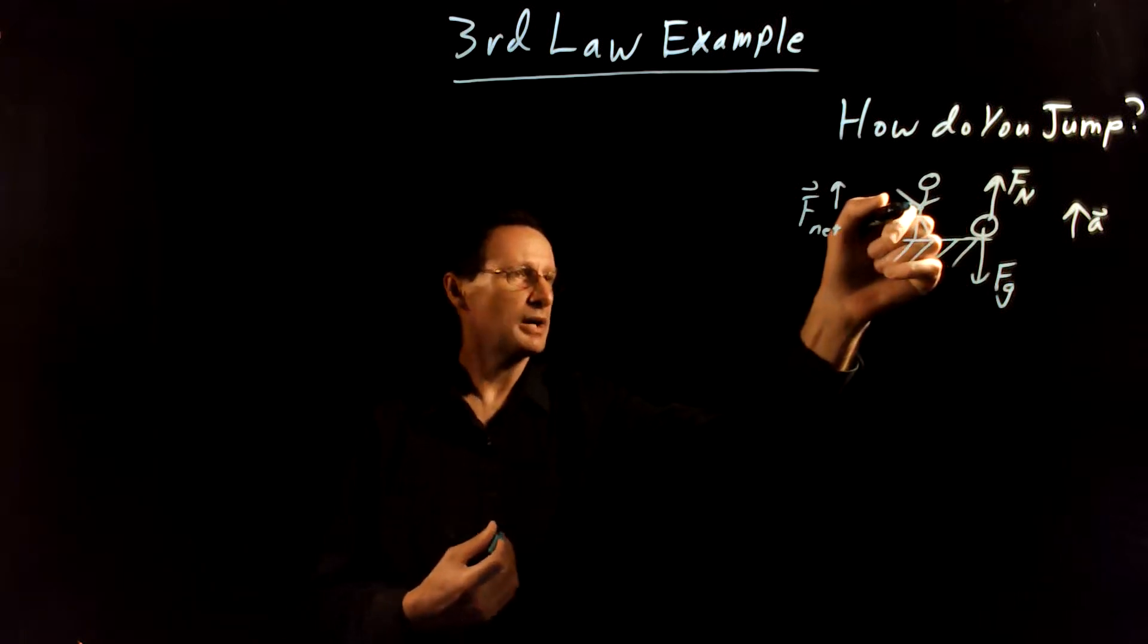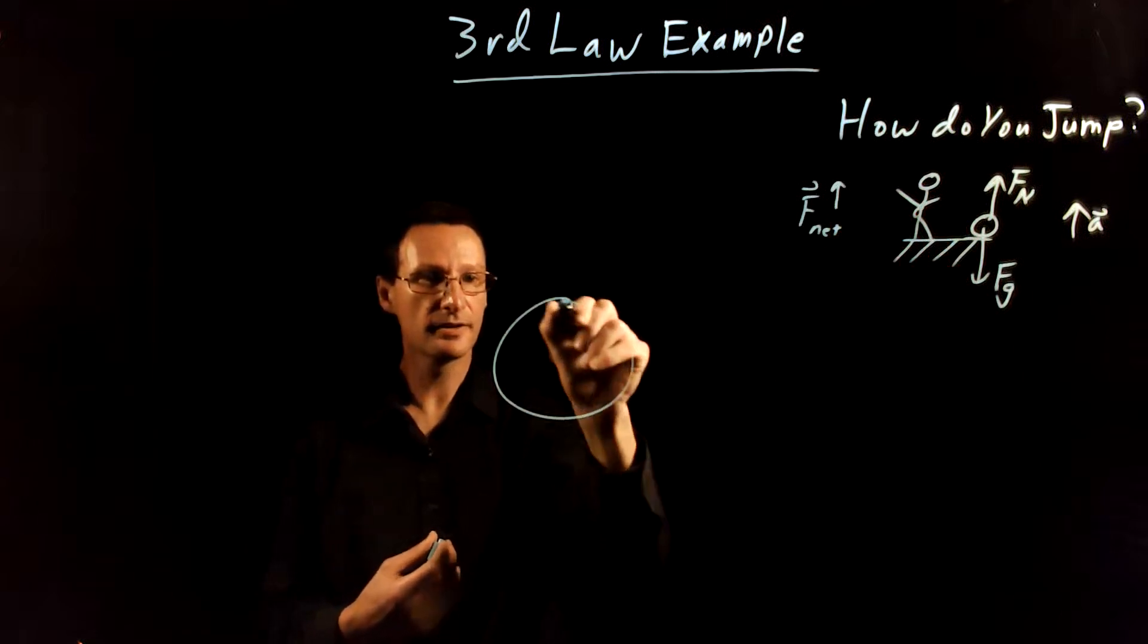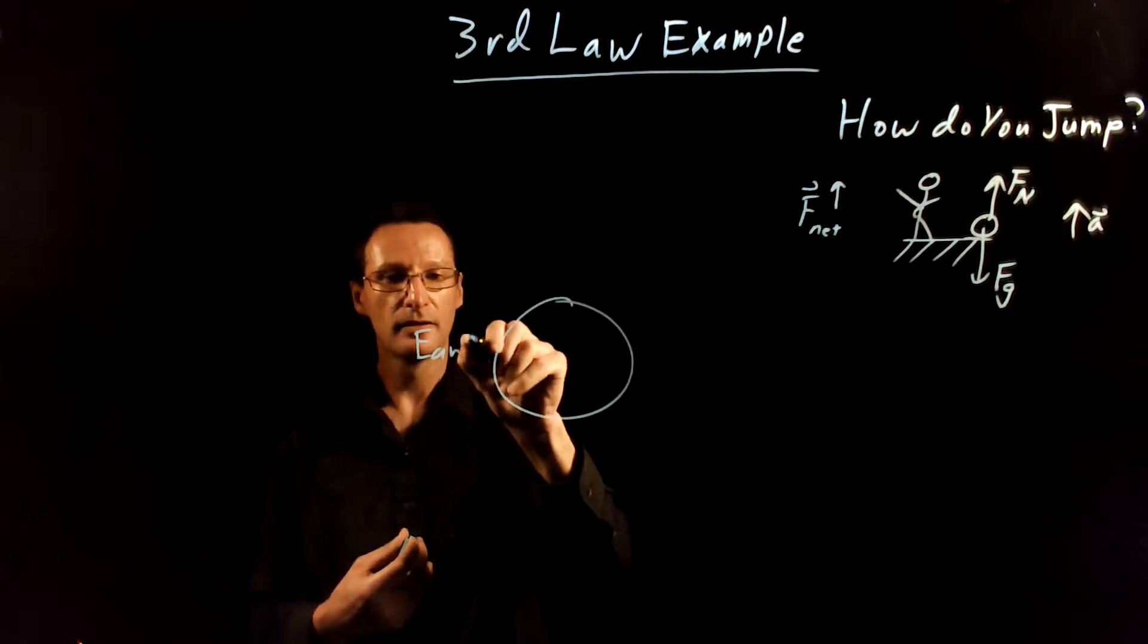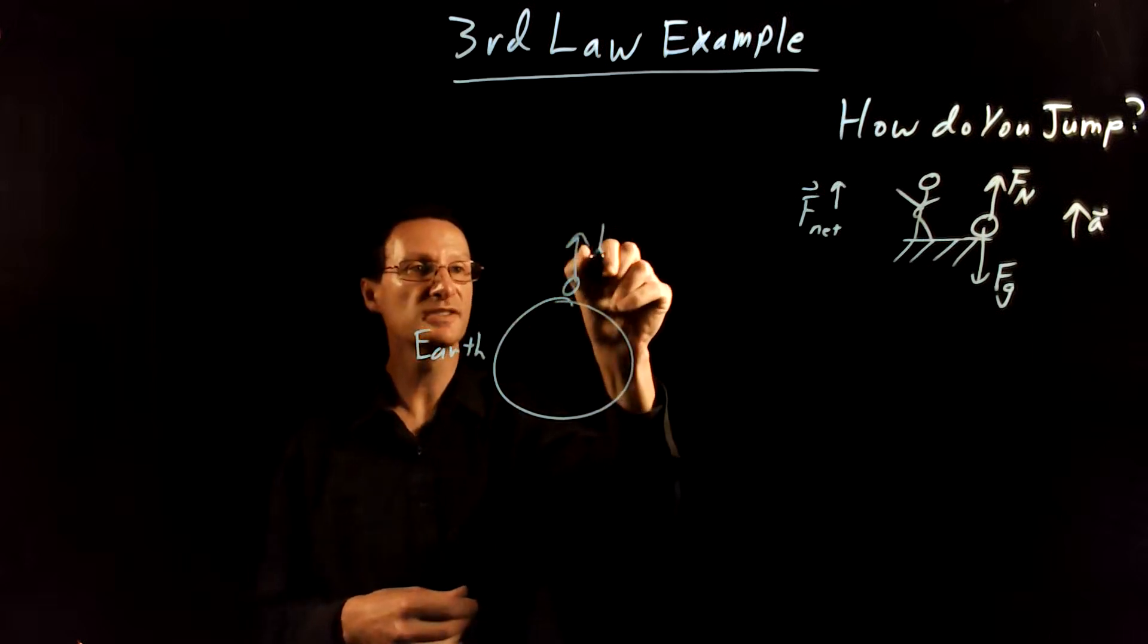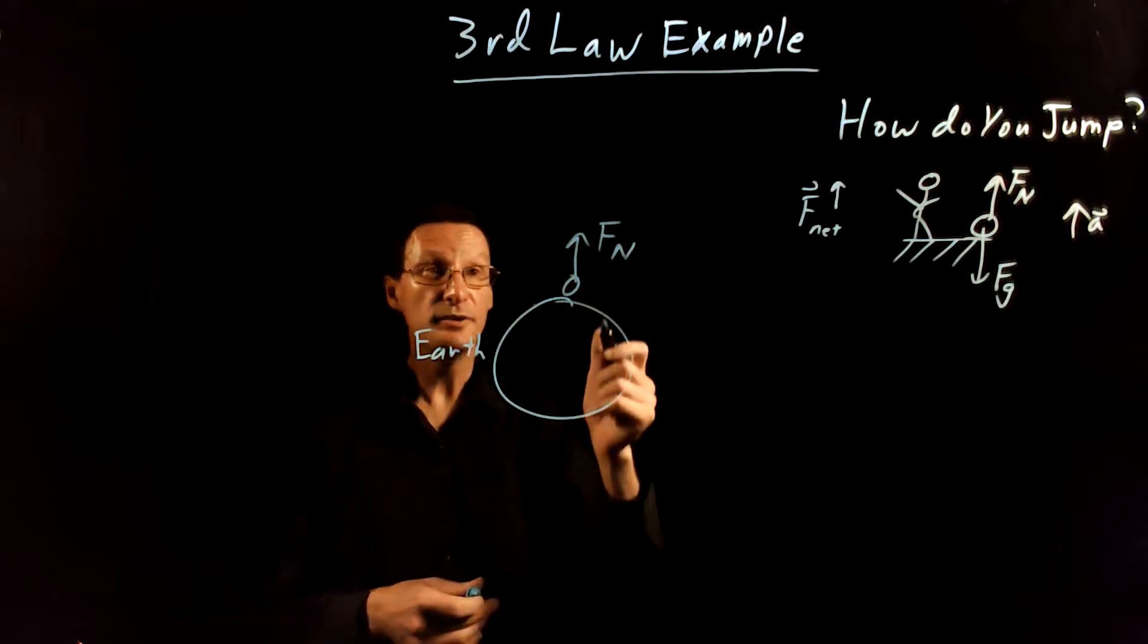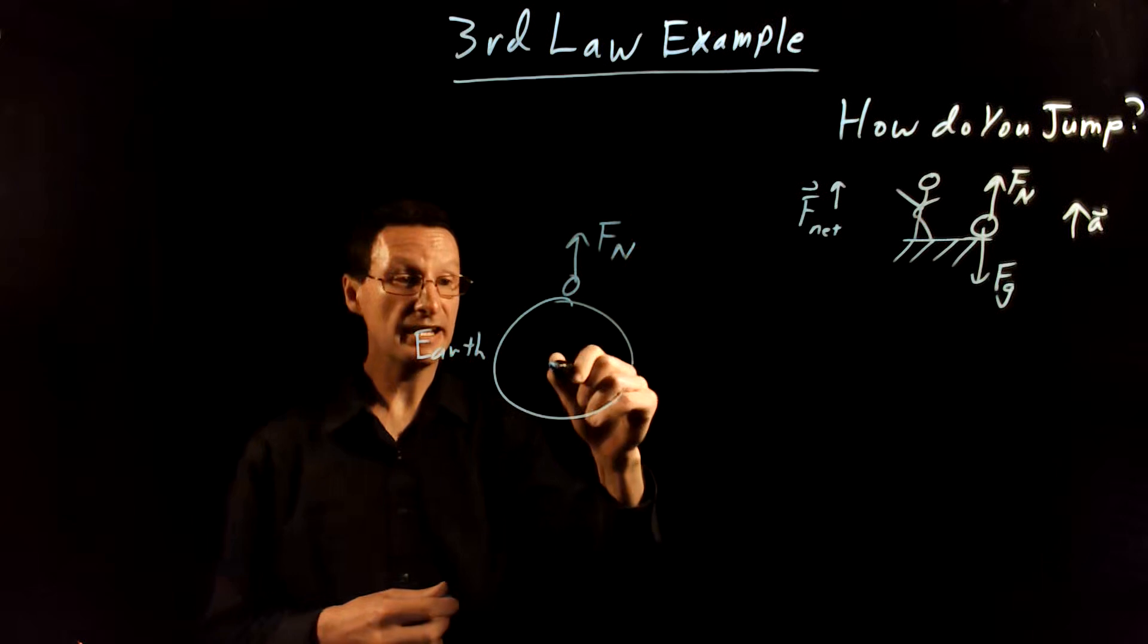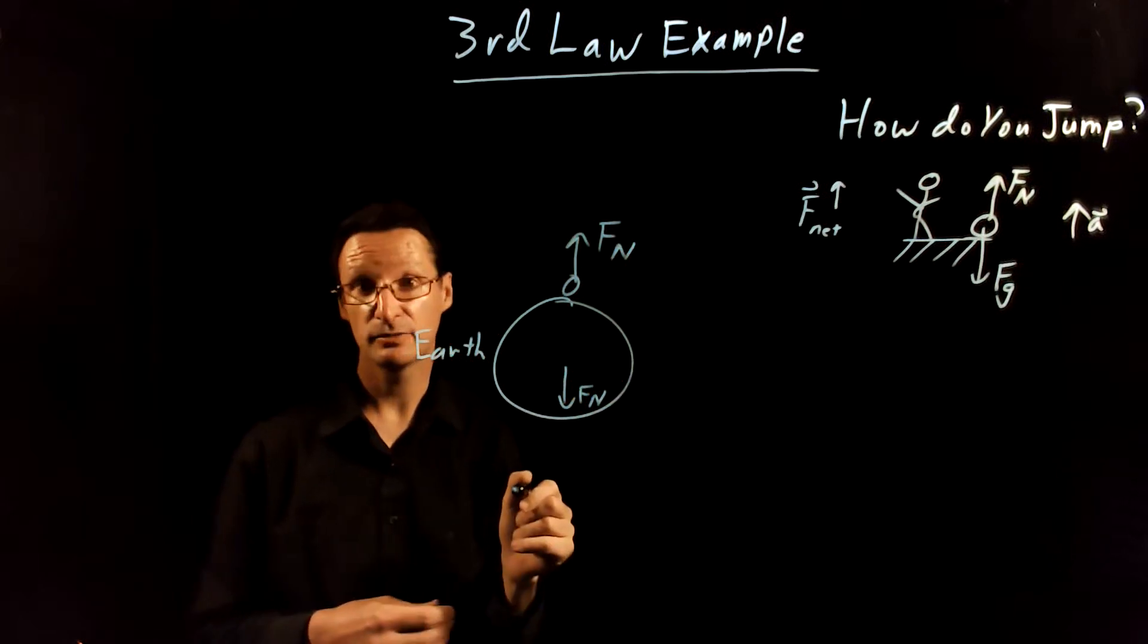So let's think about the third law partner forces to these two forces. In this case, the two objects are you and the earth. So let's draw the earth. Here's the earth. And here's you there. And you have a normal force because you're touching the earth. That's because the earth causes that. Newton's third law then says that you cause a normal force back on the earth equal in magnitude opposite in direction.